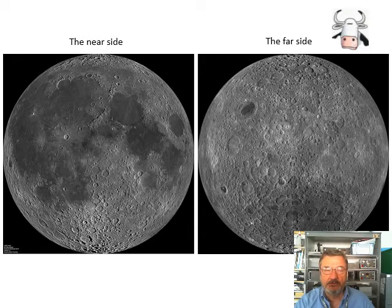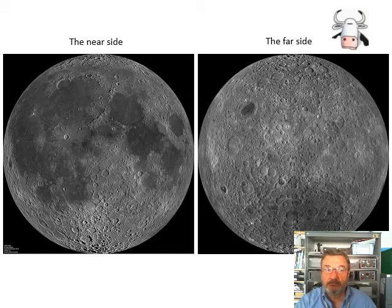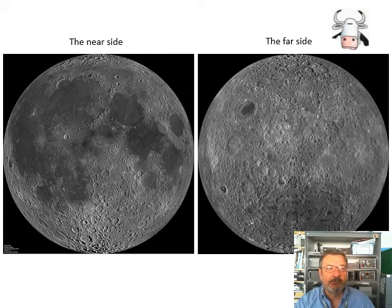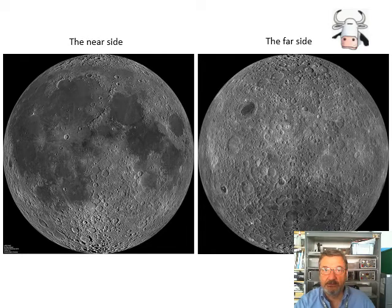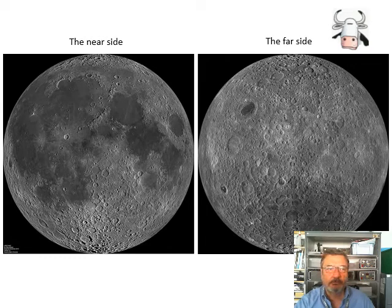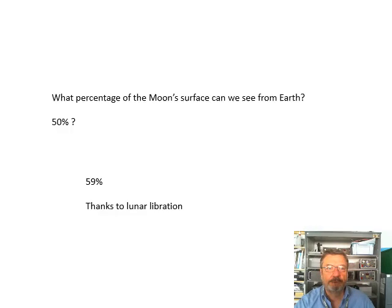It wasn't until we actually sent up satellites to the Moon, which went around the Moon and had a look at the far side, that we knew what it looked like. Here's a photograph of the near side and the far side, and you'll see there's some differences between them which we'll talk about in another video.